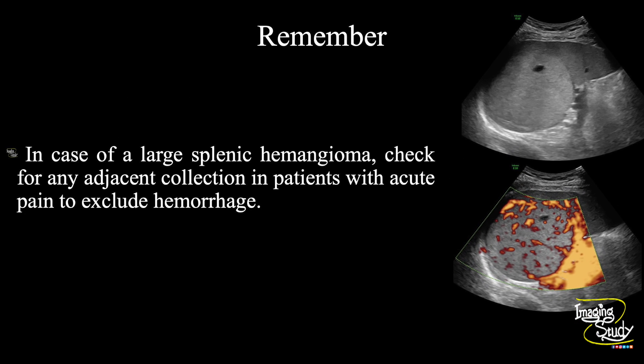The take-home message: in case of a large splenic hemangioma, always check for any adjacent or peritoneal collection. This is important in patients with acute pain to exclude hemorrhage from this hemangioma.